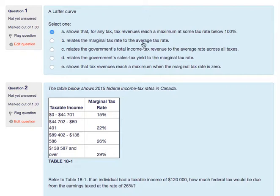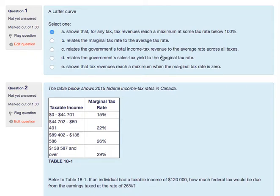One answer says it relates the marginal tax rate to the average tax rate — that's not what it's about. Another says it relates government total income tax revenue to the average rate across all taxes — it's not necessarily across all taxes; you could do this on an individual tax basis. Another says it relates government sales tax yield to the marginal tax rate — it's really based on a specific tax rate and tax revenues. And the claim that tax revenues reach a maximum when the marginal tax rate is zero is false — if it were zero, we wouldn't have any tax revenues.